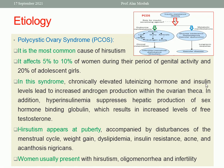The commonest etiology is polycystic ovarian syndrome, affecting 5 to 10% of women and 20% of adolescent girls. There is elevation of LH and increased insulin due to insulin resistance, which is one of the main pathogenic mechanisms in PCOS. Increased LH stimulates the ovarian theca cells to produce androgen. Insulin resistance also increases androgen and suppresses hepatic production of sex hormone binding globulin, leading to increased free testosterone.